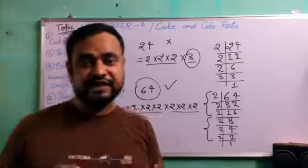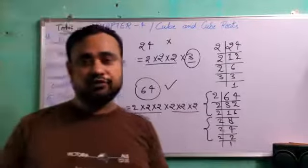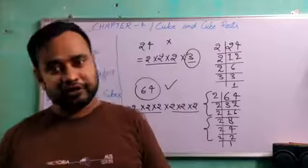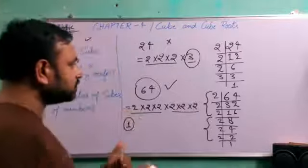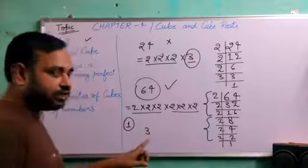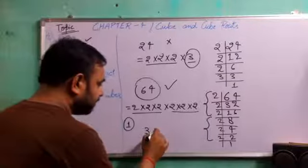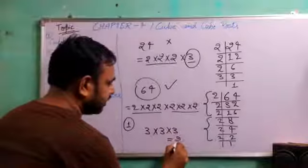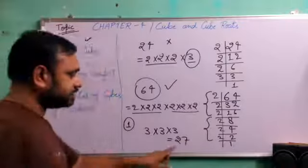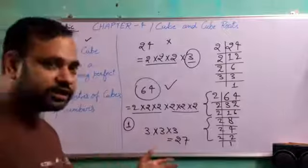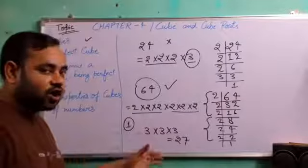Our third fact is the cube of all odd numbers is always odd. Whenever we multiply, I can show you it here that 3, we know that it is an odd number. So if we multiply 3, 3 times, 27 we will get and it is also an odd number. So cube of an odd number will always be odd.